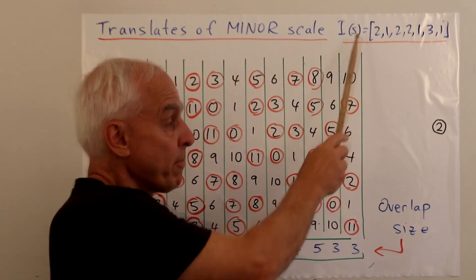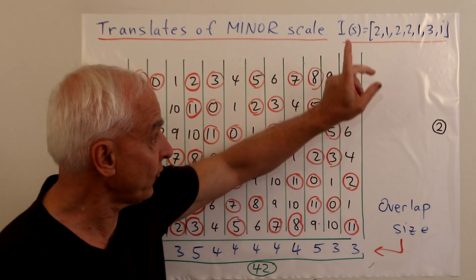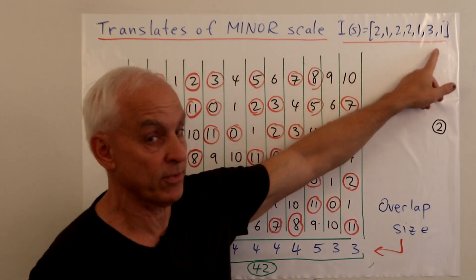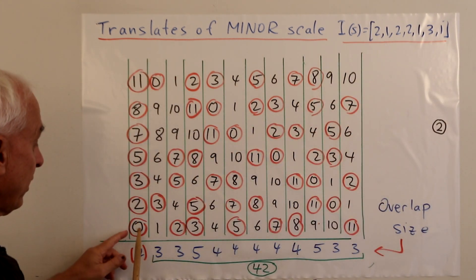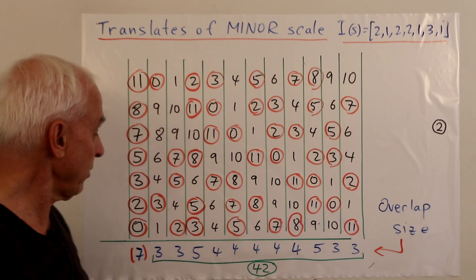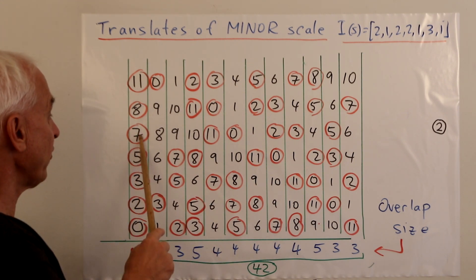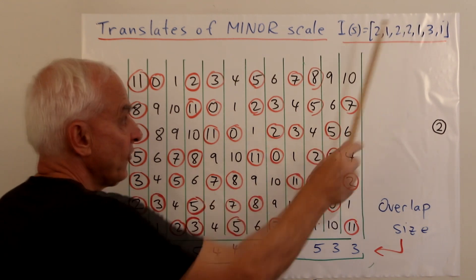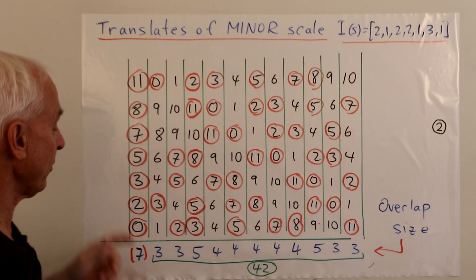So what happens if we do this for some other scale? For example, the harmonic minor scale with interval sequence 2, 1, 2, 2, 1, 3, 1. Well, here's a scale built on some note 0: 0, 2, 3, 5, 7, 8, 11, which has these as the interval sequences. And here are the various translates of this original minor scale.